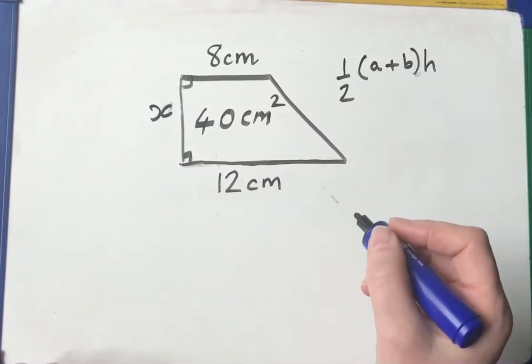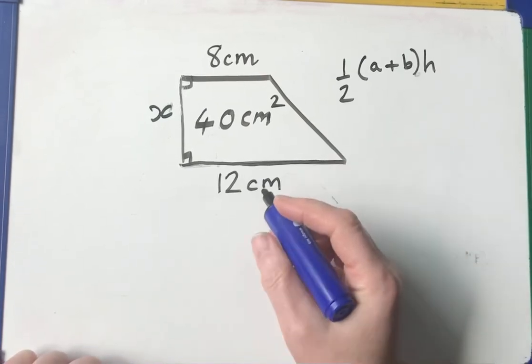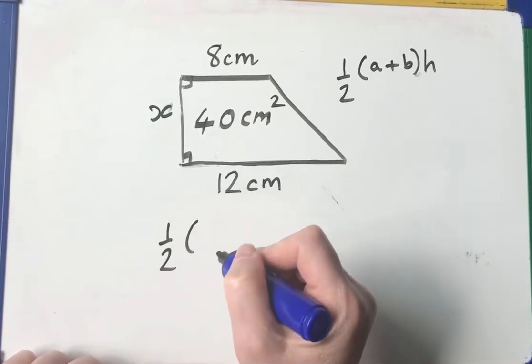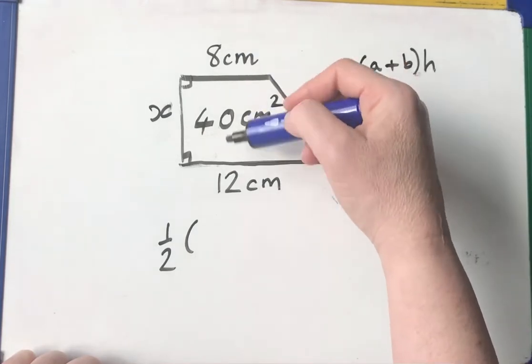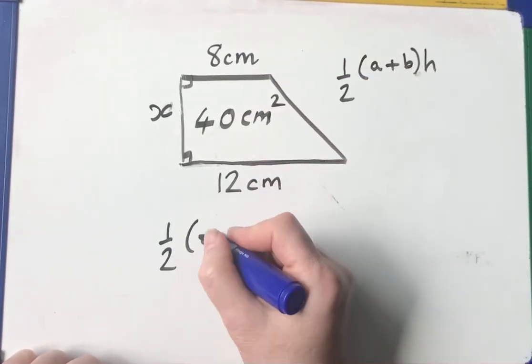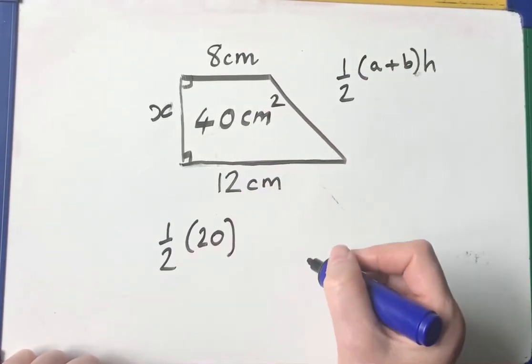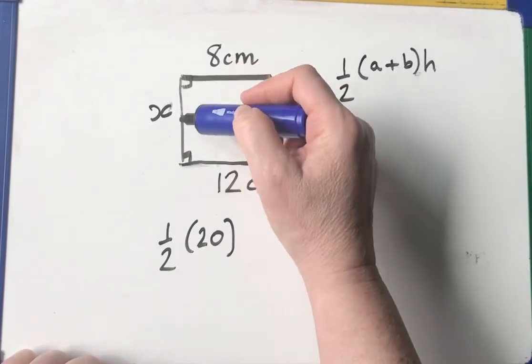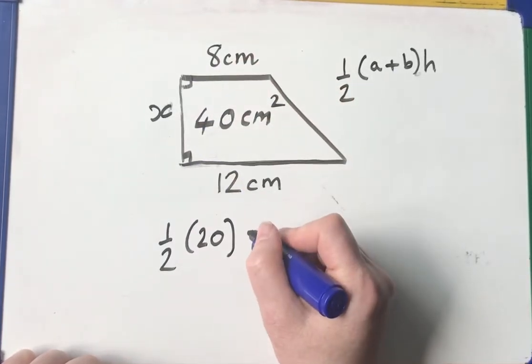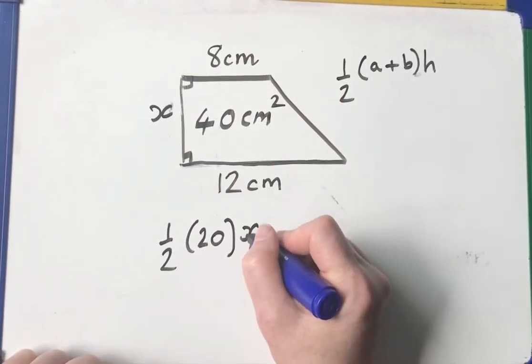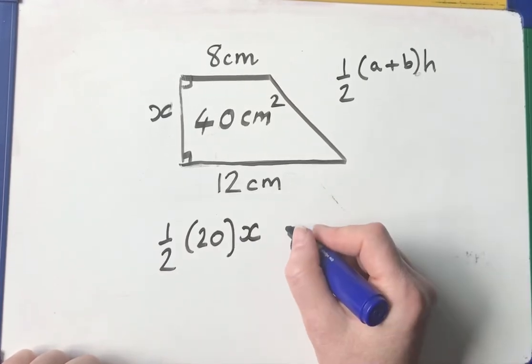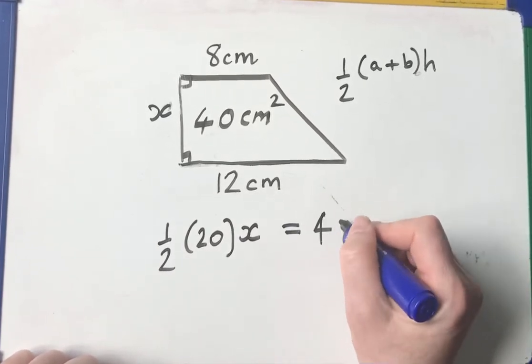Let's have a look. So a half multiplied by the parallel sides 12 plus 8 is 20. And after that, I've got to multiply it by the height, but I don't have a number to put in. I've only got the letter x. When I've done all that, I get an answer of 40.